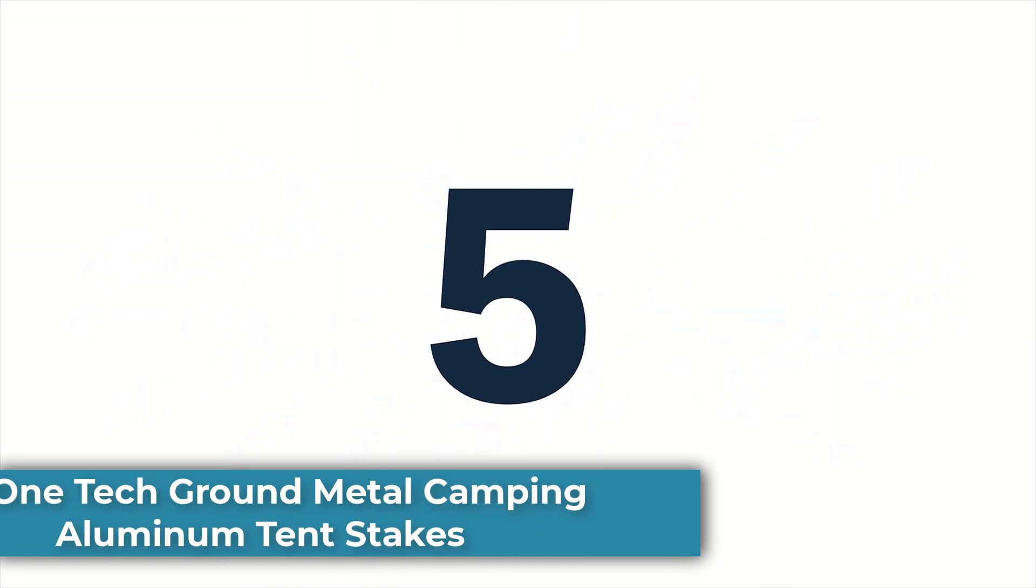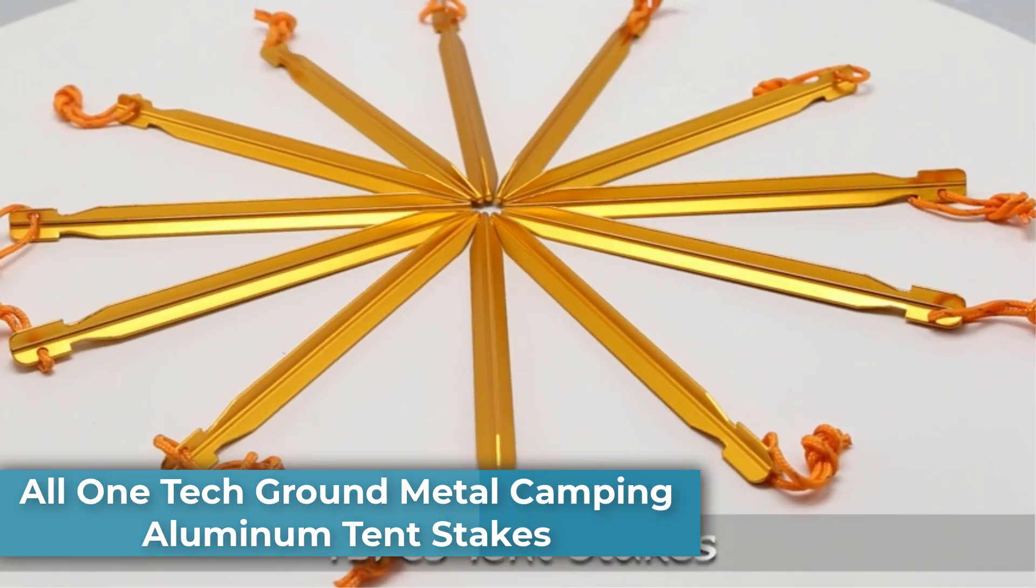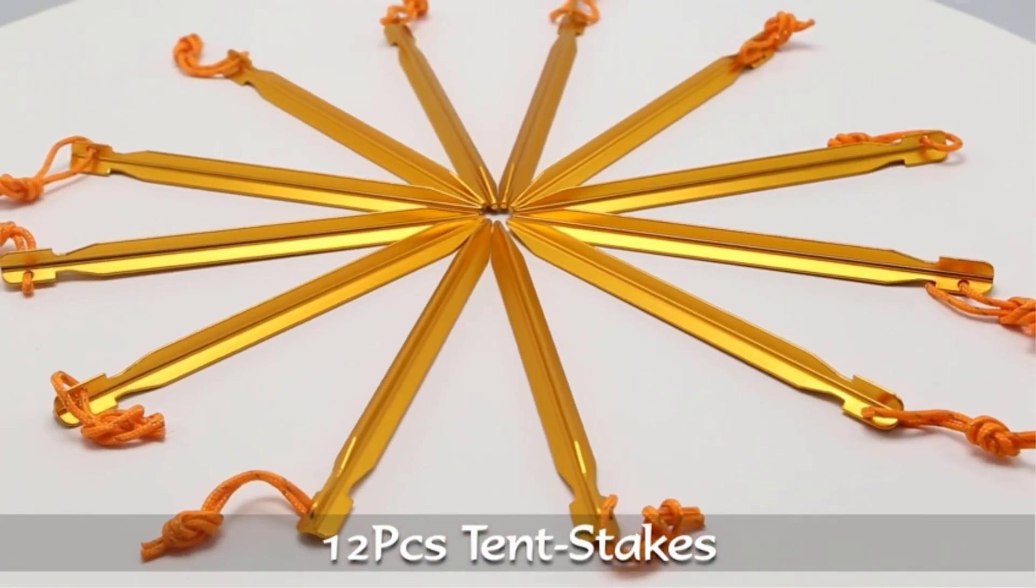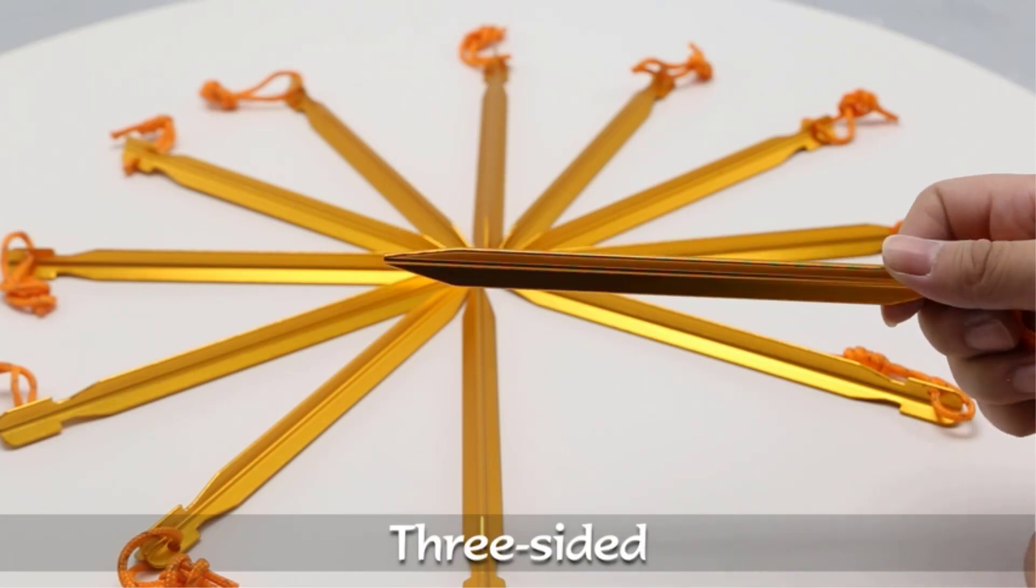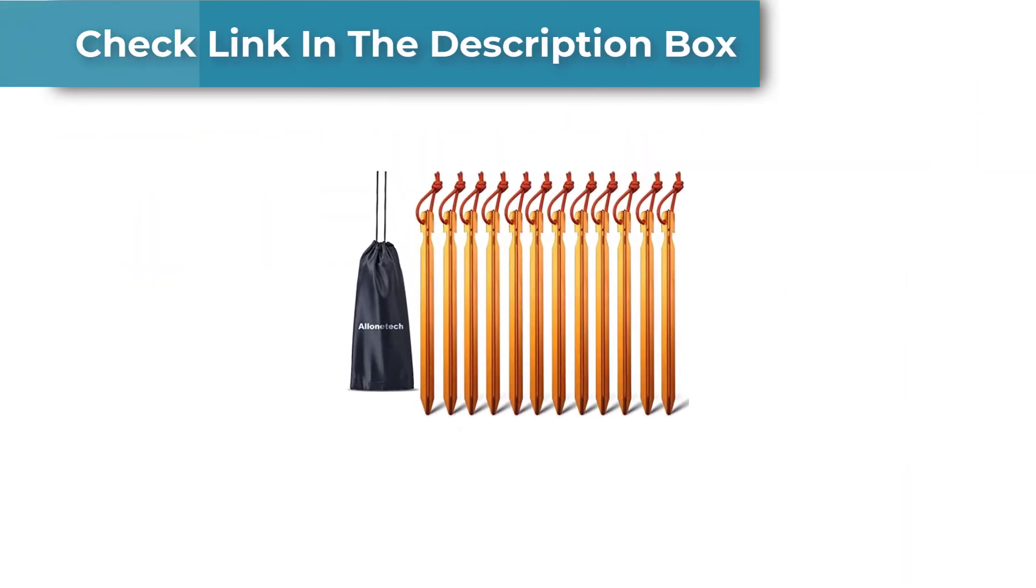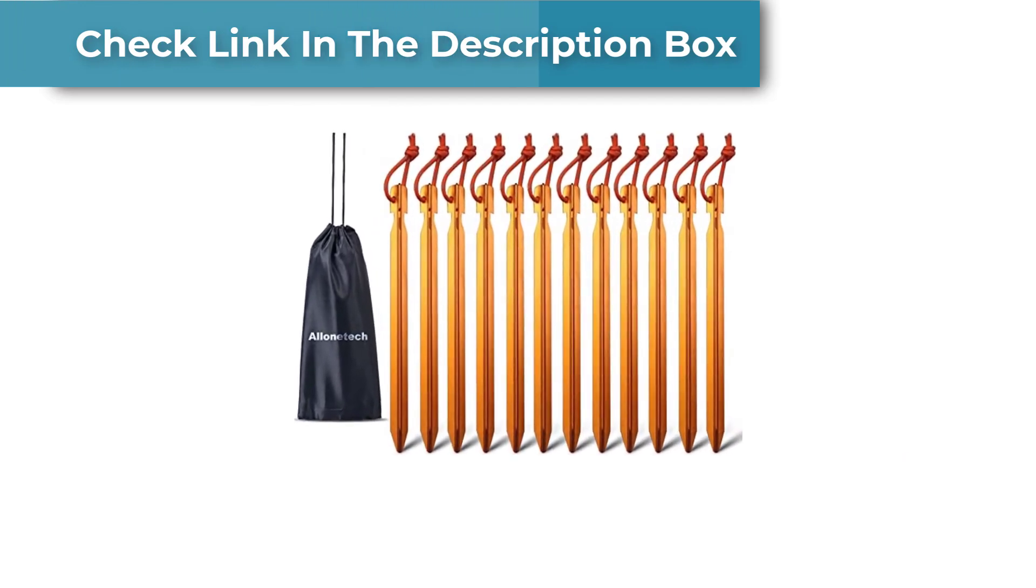Number 5. All One Tech Ground Metal Camping Aluminum Tent Stakes. The All One Tech Ground Metal Camping Aluminum Tent Stakes are a great addition to any camping kit. These stakes are made of high-quality aluminum, making them both durable and lightweight.